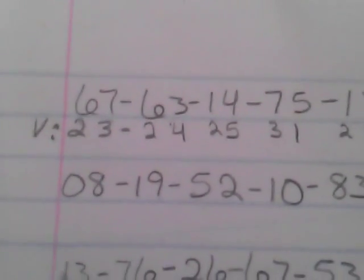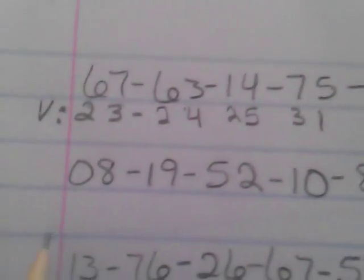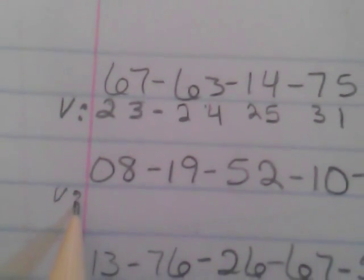These are the lottery numbers. First line is the lottery numbers. Second line is the V track numbers so that you know which is which. You just put a V there so you know what the numbers are you're looking at.